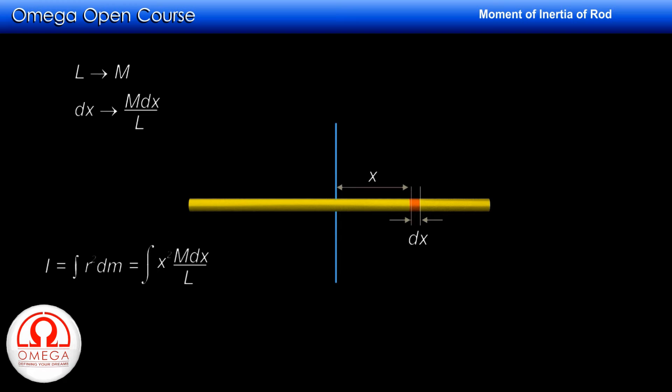Putting these values in the expression, we get moment of inertia of rod is equal to integration of x square into m by l dx. If we vary the value of x from minus l by 2 to l by 2, all the particles of the rod are covered. So, the lower limit of the integration must be minus l by 2 and upper limit l by 2.